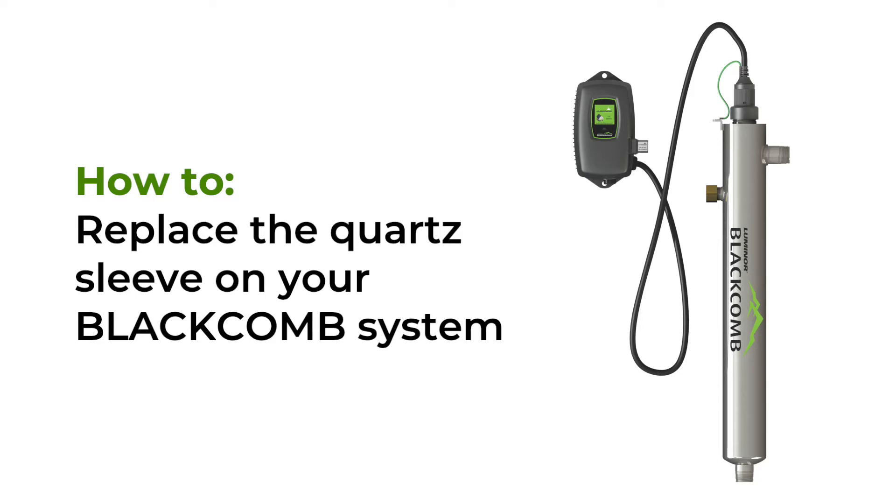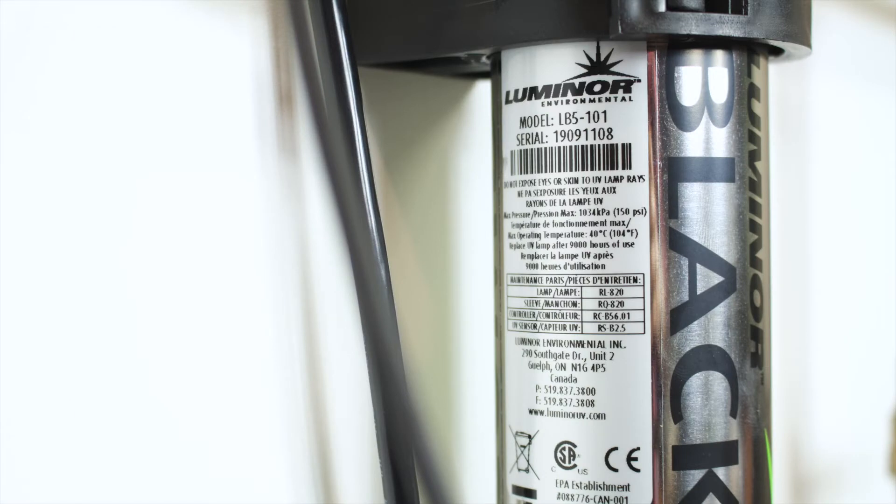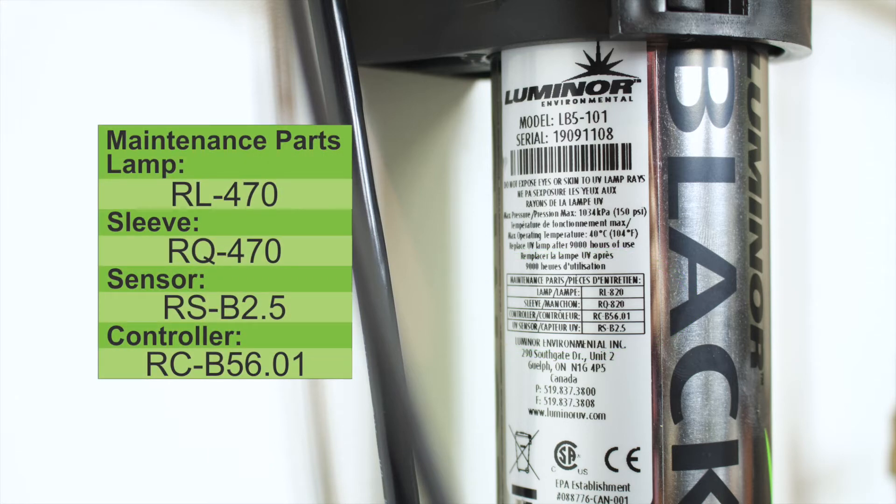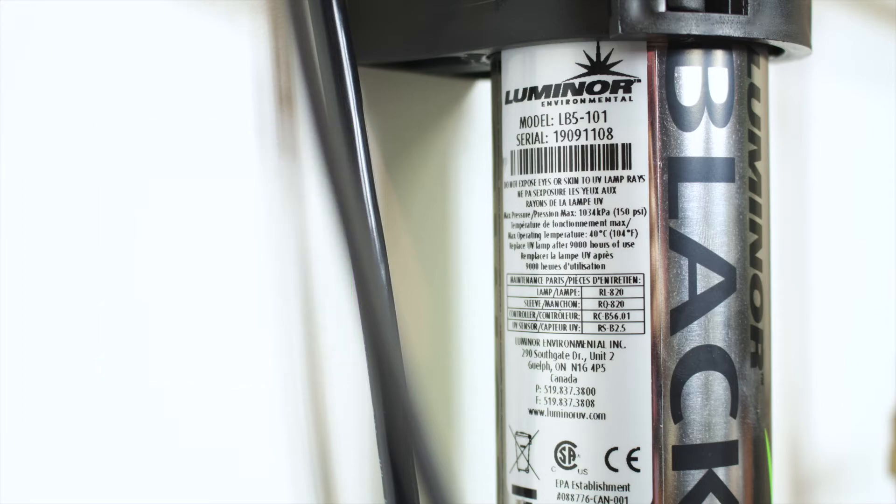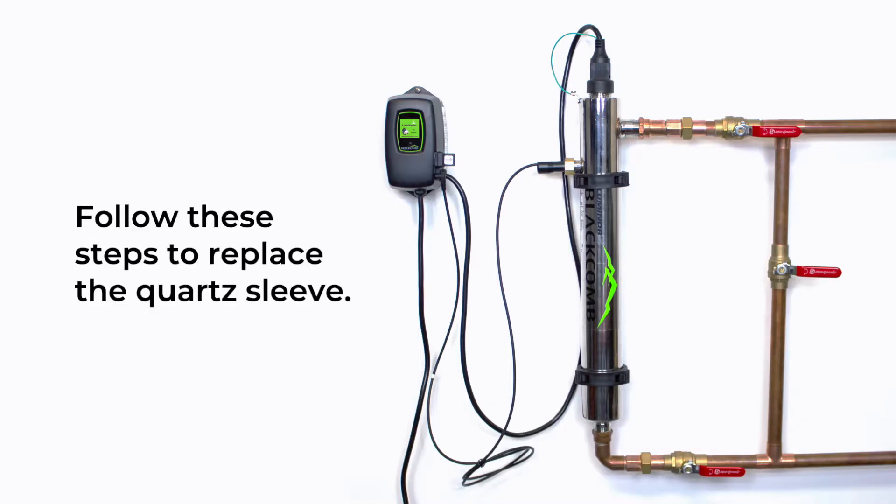In this video you will learn how to replace the quartz sleeve on your Black Comb system. Before replacing the quartz sleeve, ensure that you have the correct parts. The part number that you require will be found on the silver label on your reactor or on the maintenance part screen of your controller. Once you have determined that you have the correct replacement parts, complete the following steps to replace the quartz sleeve.